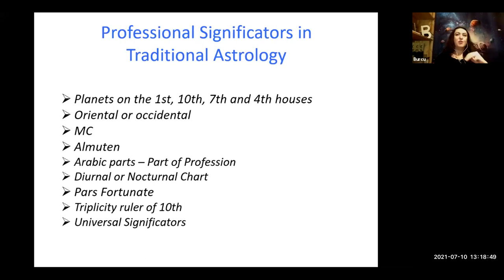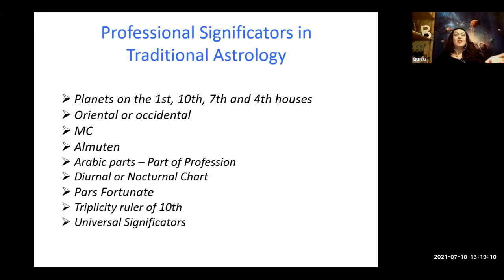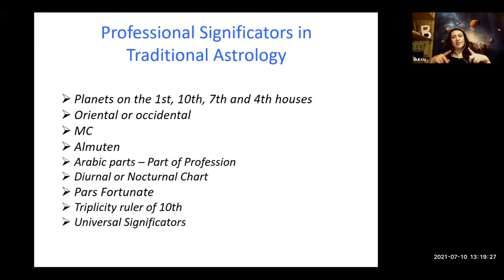Now let's go deeper on the universal significators of profession. There are three significators of profession as noted in traditional texts, and they are today's subjects: Mercury, Venus, and Mars. All ancient astrologers considered them as universal significators of profession. These three planets take priority by sign and the houses they are in. Why these three? We need to consider that there were not many professions back then. The ancients thought the sun and the moon symbolize kings and queens. Robert Zoller explains that the sun is the creator of life and is considered a king, and the moon is the creator of the body and is considered a queen. Kings and queens did not have professions, so luminaries were not suitable as professional significators.